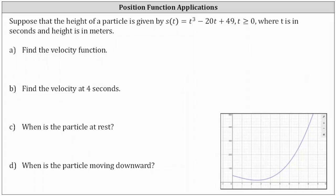Suppose that the height of a particle is given by s of t equals t cubed minus 20t plus 49, where t is greater than or equal to zero, where t is in seconds and height is in meters. Below, I have a graph of s of t. Notice starting at time zero, the particle moves downward, and then somewhere between two and three seconds, the particle begins to move upward.